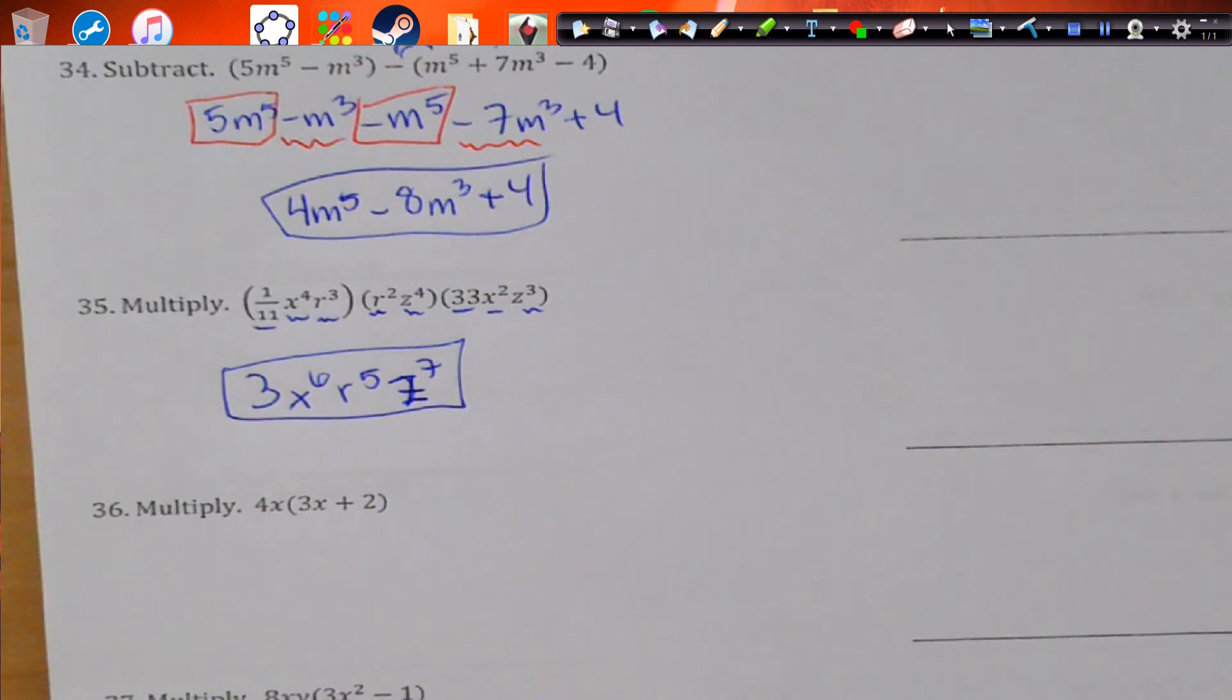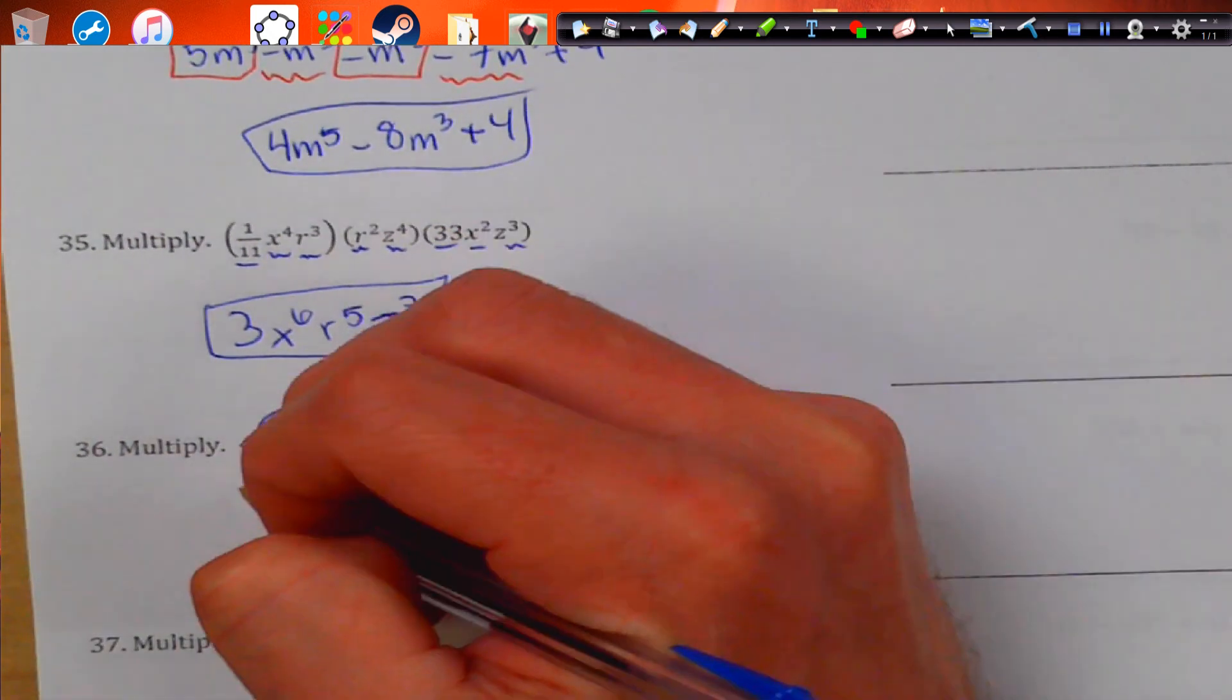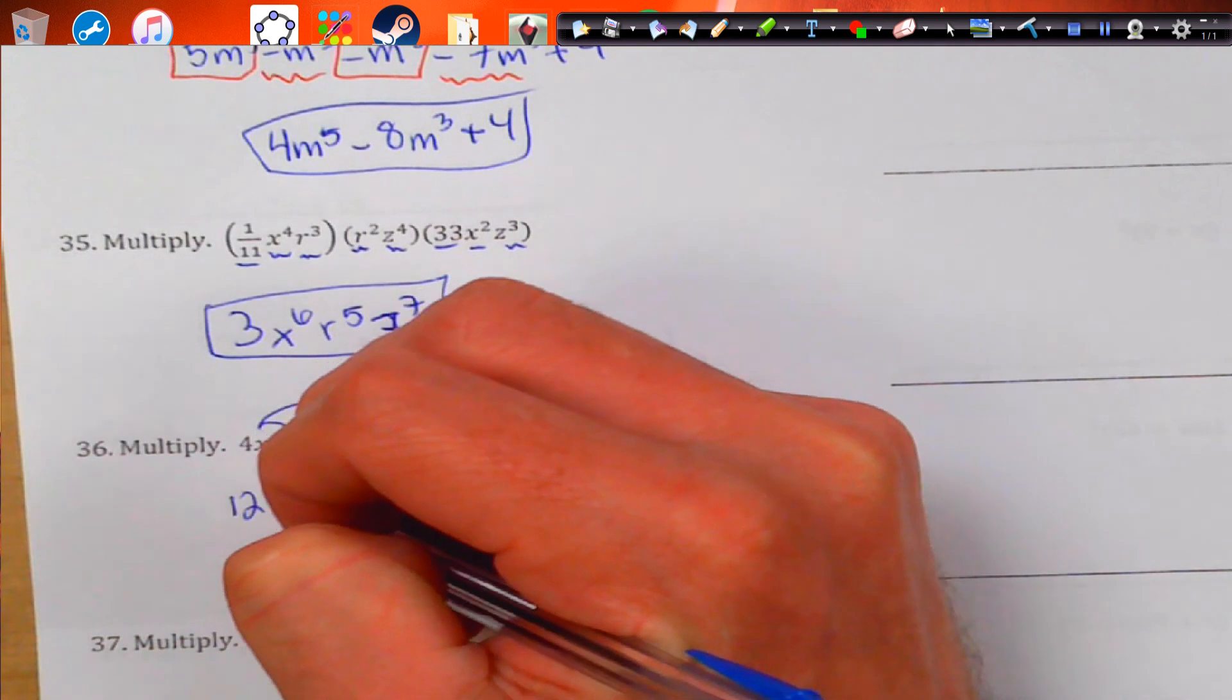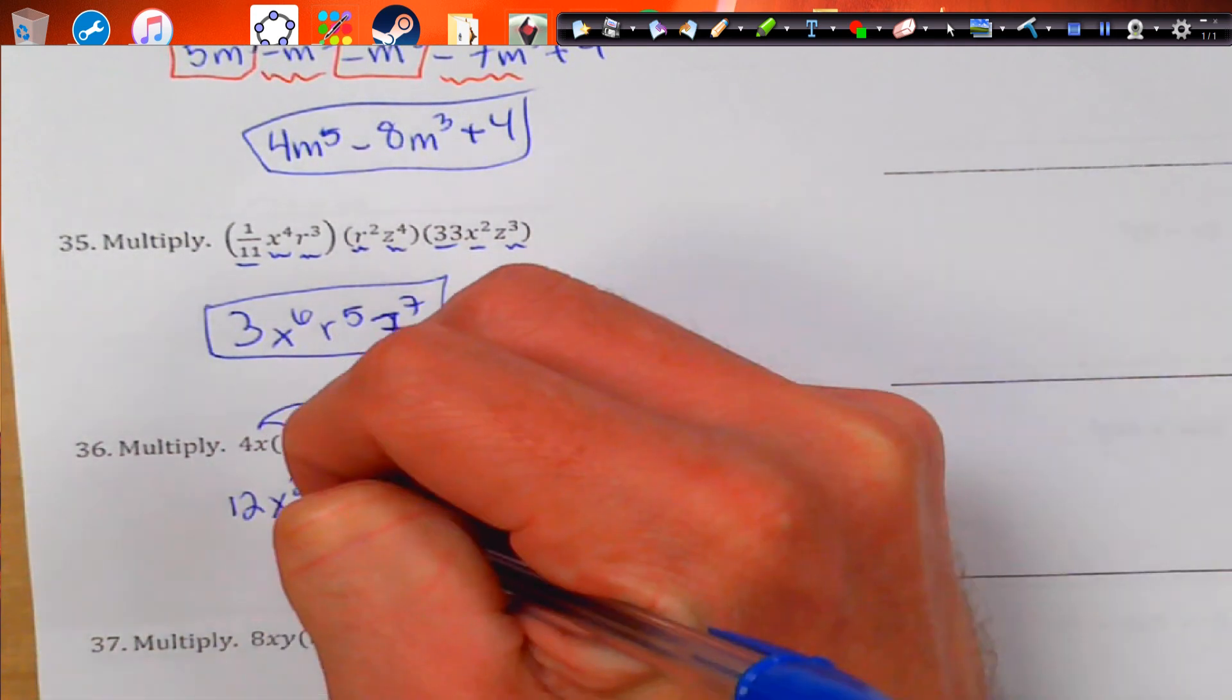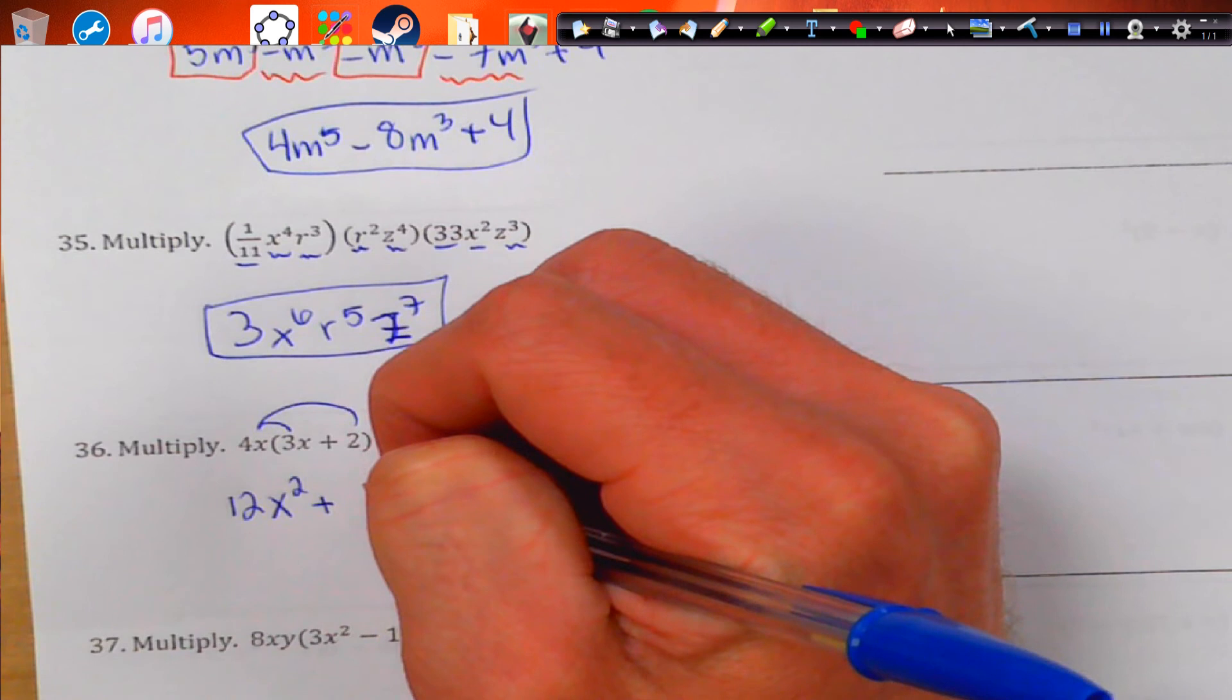Number 36, we're just multiplying, so we're going to distribute. This is going to become 4 times 3, which is 12. x times x is x squared. And then 4x times 2 is 8x.